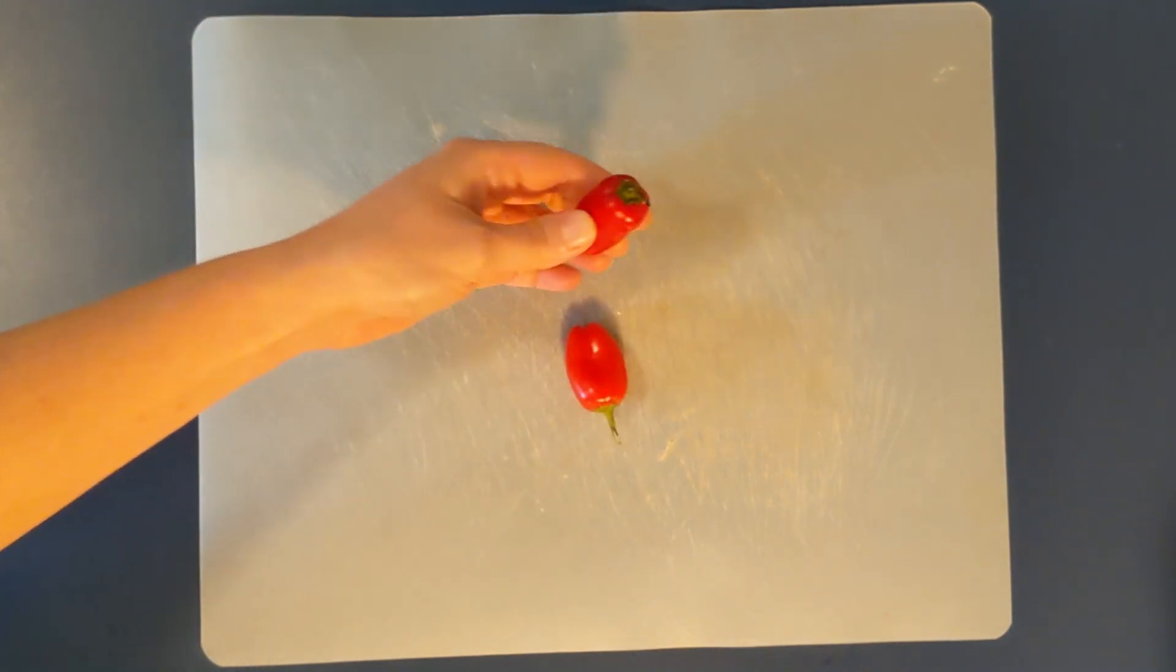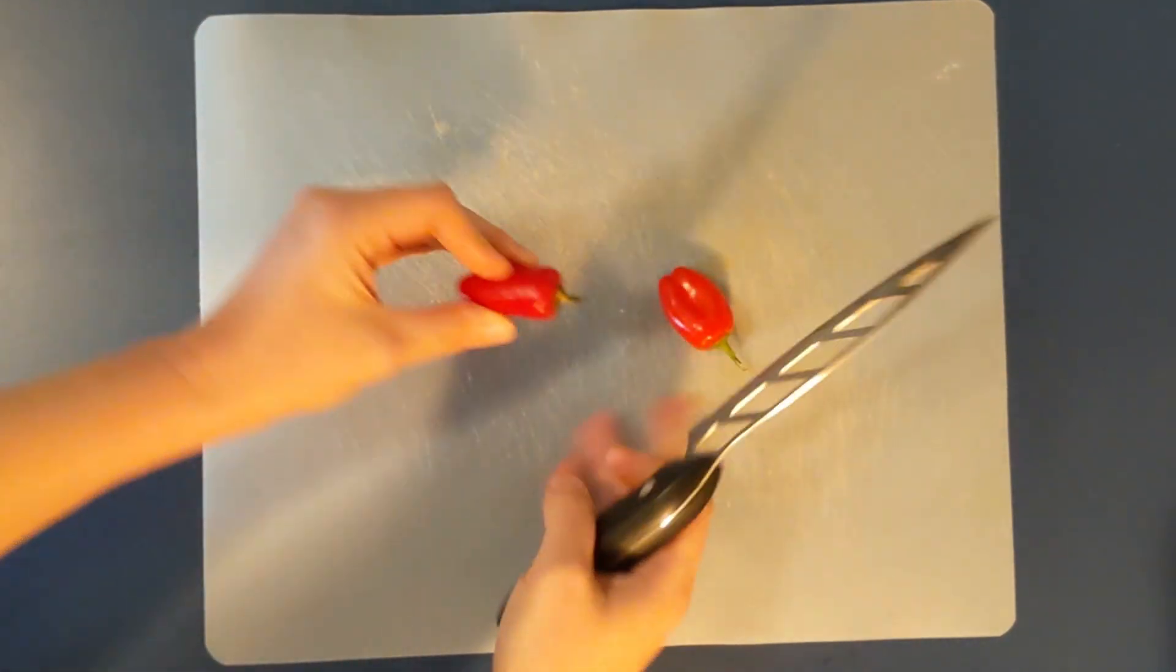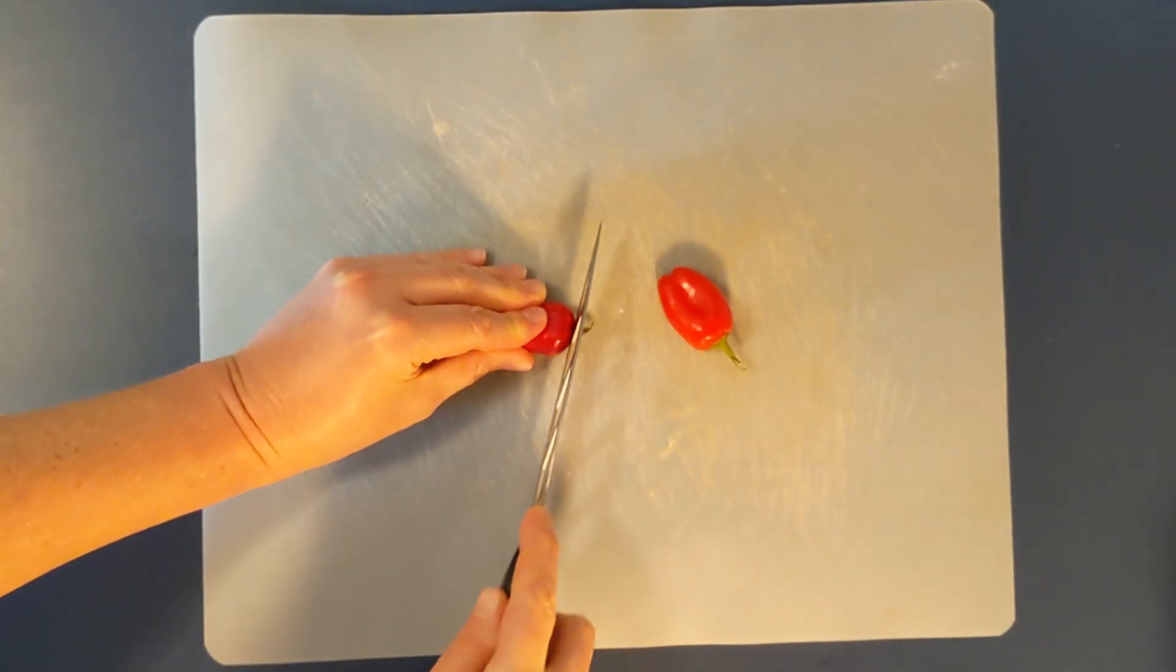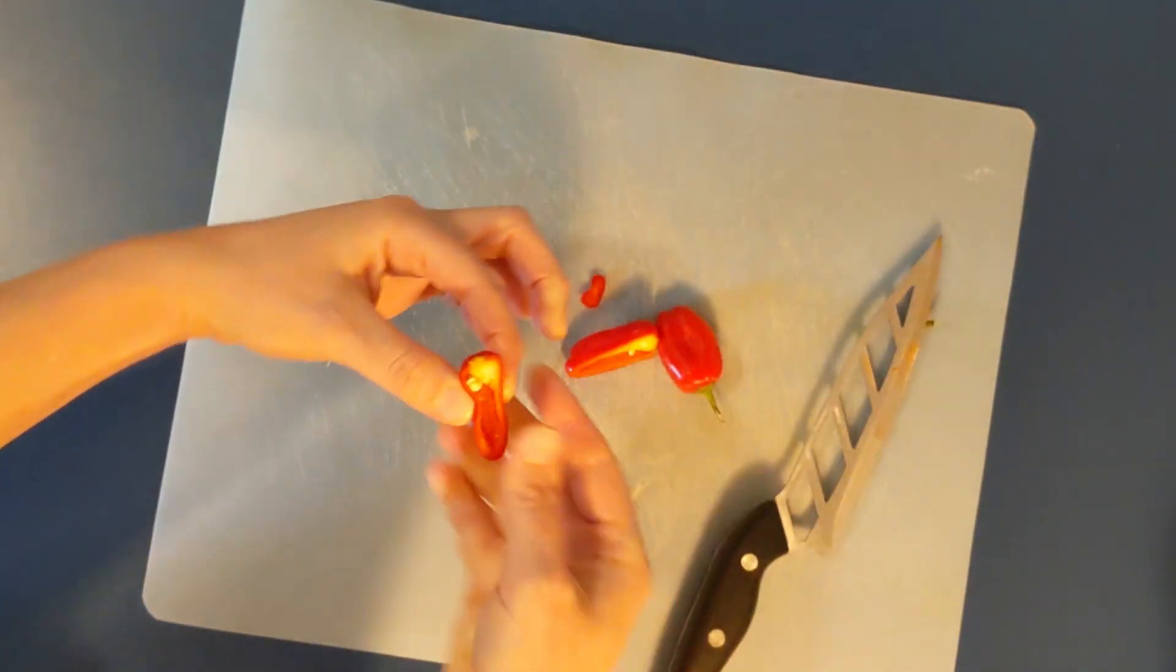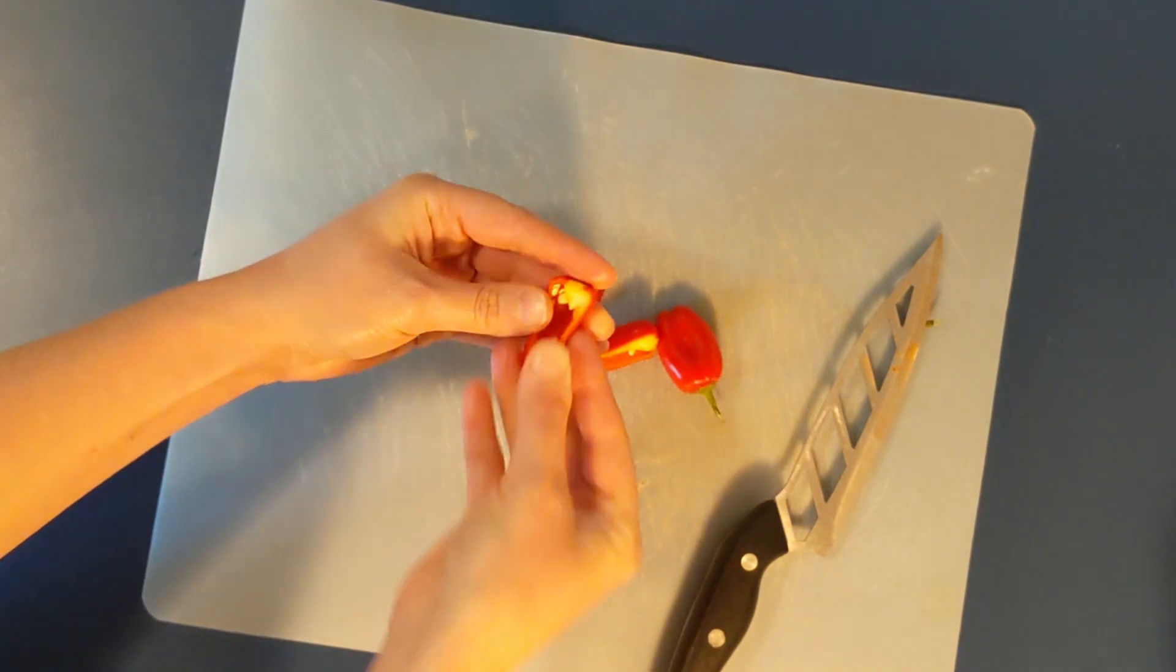But that's what you do - you save them from the ripe peppers that are fully red. I just cut the tops off and then cut them in half, and then you can save the seeds. See all the seeds in there?